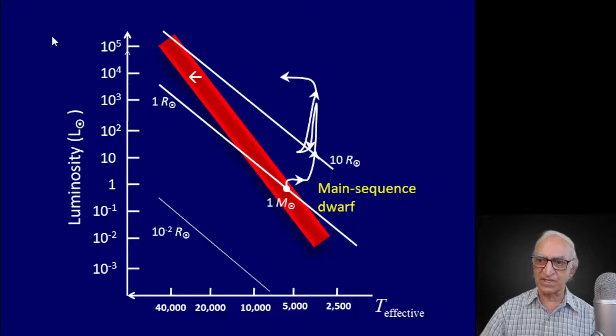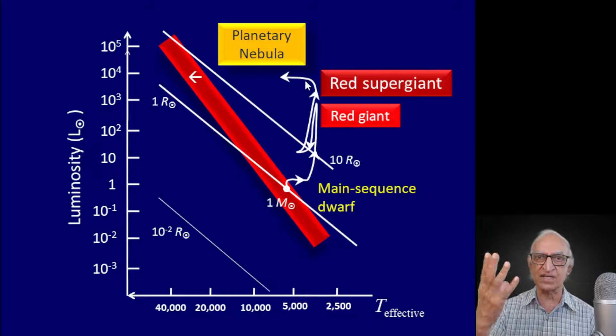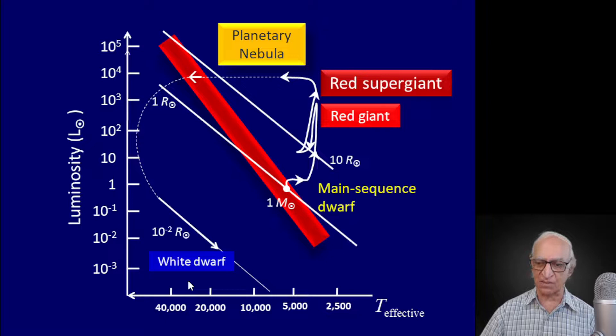The main sequence dwarf ascends to a giant branch, becomes a red giant, then it becomes a red supergiant, then it becomes pulsationally unstable and ejects its entire envelope. What is left is the inner carbon-oxygen core, whose radius is roughly the radius of the Earth. Since there is no energy generation, it will cool, it will become degenerate, and it will become a white dwarf.